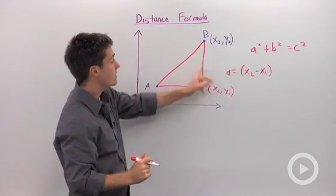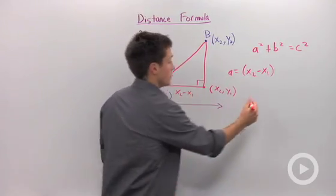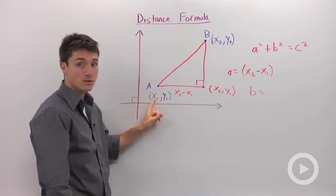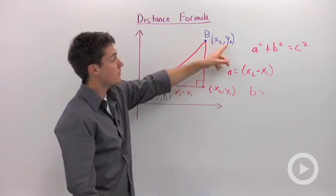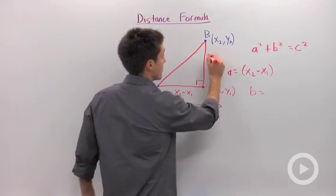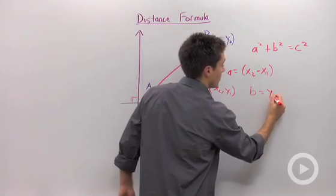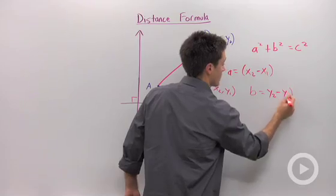If I find B, B is going to be the other leg of this triangle. So just like I said that the horizontal distance was the difference of our X's, the vertical distance will be the difference of our Y's. So this will be Y2 minus Y1. So B equals Y2 minus Y1.